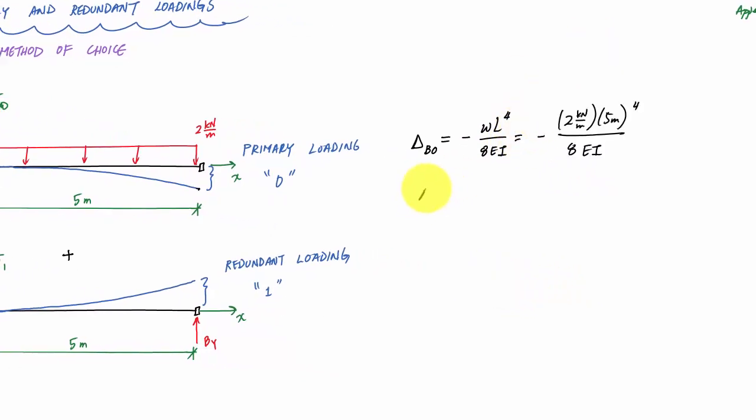And when I plug and chug into this thing right here, I would get, and this gives me a result of negative 156.25 over EI. Those are properties, geometric and material properties that will have numbers to it, kilonewton meter cubed. And EI has units of kilonewton meter squared, so based on the units canceling out, I should get, if I had numbers for E and I, I would have units of meters in this calculation. So that's delta B0, deflection at B for the primary loading.